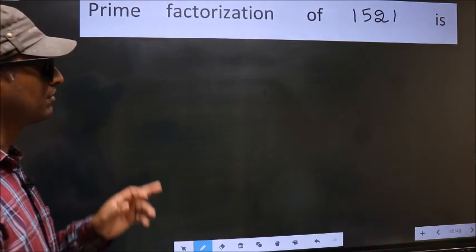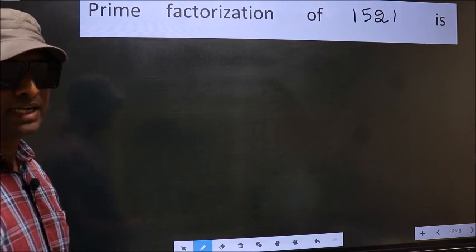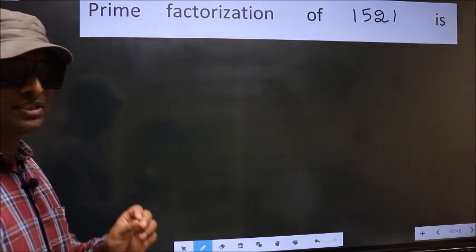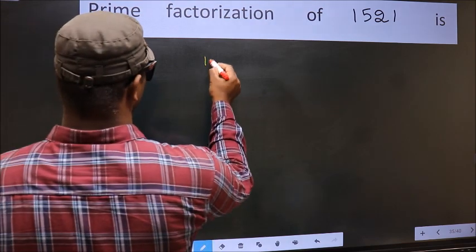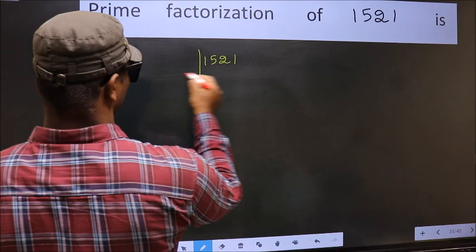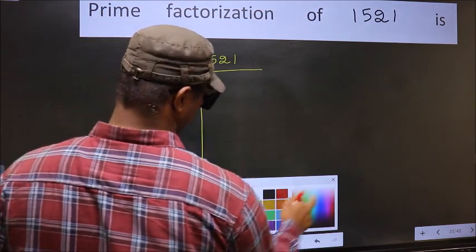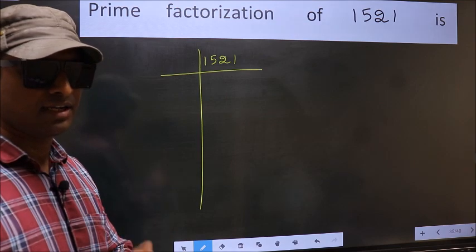Prime factorization of 1521. To do prime factorization, first we should frame it in this way. 1521. This is your step 1. Next.